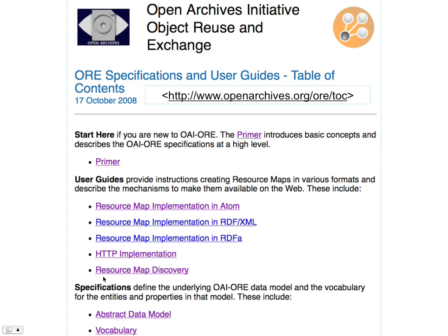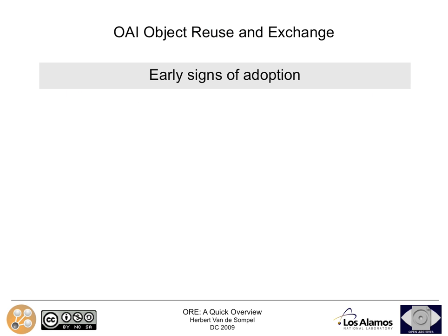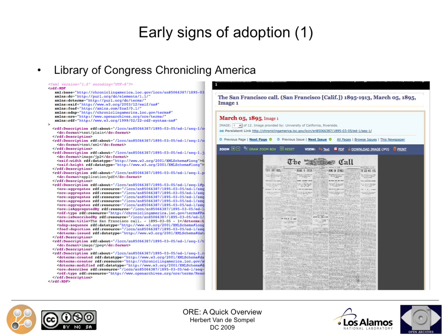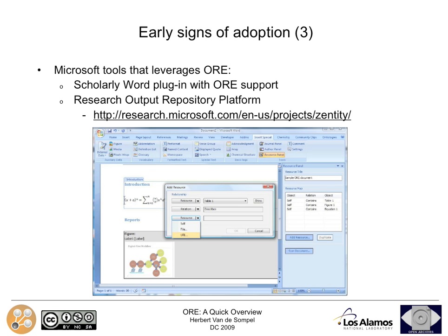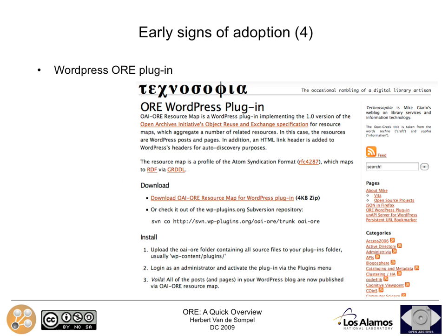There are communities already adopting the ORE specs. There is a beautiful implementation by the Library of Congress in Chronicling America, which is a site for digitized newspapers. There is a browser plugin that visualizes aggregations when resource maps are detected. There is also adoption by Microsoft — specifically two tools: a Word plugin and a repository platform that comes with ORE support. And there's a WordPress plugin that exposes aggregations of posts and pages.